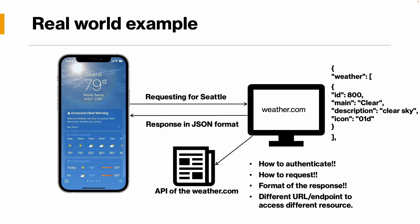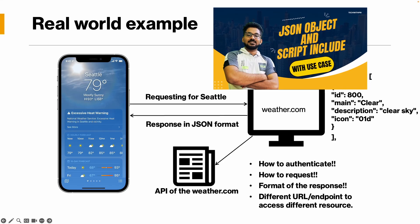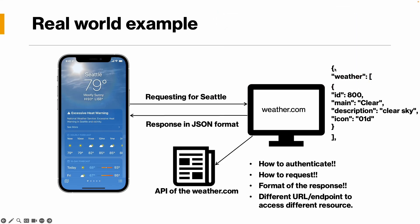The application then converts that JSON format into objects and accesses the data — something we'll do practically in upcoming videos when we use the REST API in ServiceNow. The concept of API is now clear: it's the rules and protocols that help one application connect with another. So App 1 follows the API document, requests the data, the response comes back in JSON format, and it gets displayed. We'll develop all of this practically when we connect ServiceNow to an external application.